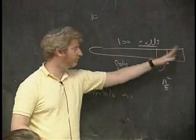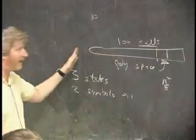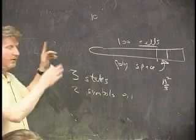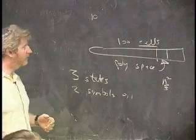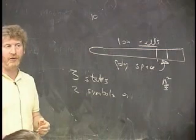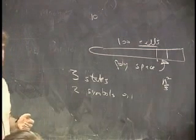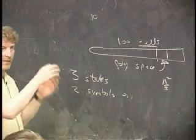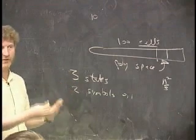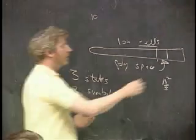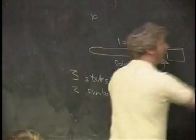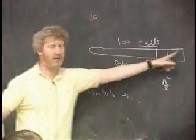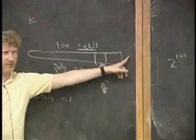The tape is essentially finite here — there's only 100 cells. How many different sets of zeros and ones can I put in these 100 cells? It's like how many binary numbers are there that have 100 digits: two to the 100th. This represents the different tape configurations.